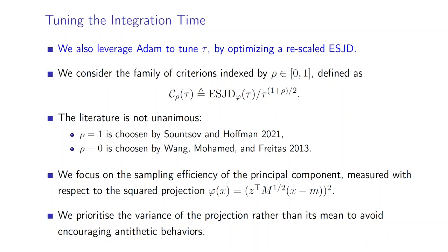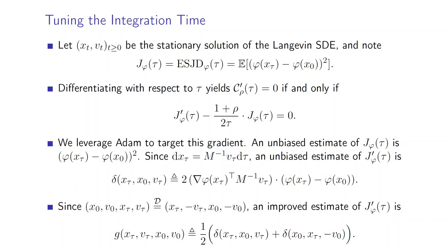Contrary to the ESS, a linear rescaling is not unanimous in the literature. We have a procedure to tune adaptively this ρ in the paper. We focus here on the sampling efficiency with respect to the principal component z, measured by the square projection defined here, and we prioritize the variance of the projection rather than its mean to avoid encouraging antithetic behaviors.